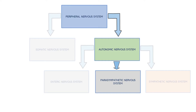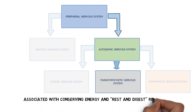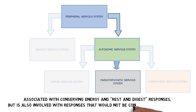The parasympathetic nervous system is typically associated with energy conservation and processes like digestion and elimination of waste products from the body. Because of these functions, the parasympathetic nervous system is sometimes referred to as the rest and digest system, although this term is an oversimplification that does not accurately describe the full range of activities of the parasympathetic nervous system.